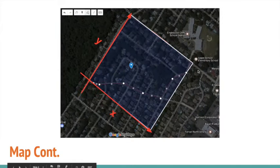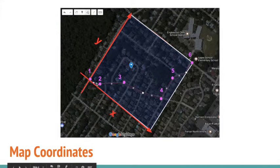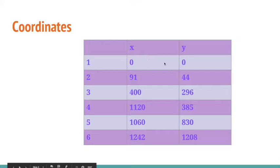I turned the borders into the x and y axis, and the coordinates are going to be six of the points shown here. I then used the Google Maps measuring tool to find the exact coordinates of each point as shown in this table.